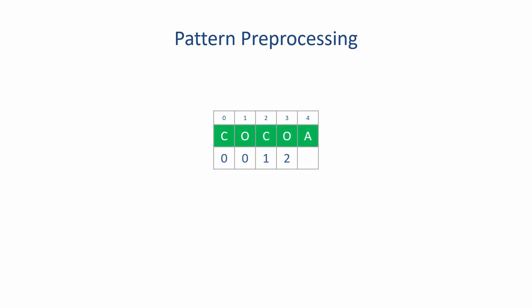Matching the whole pattern is, of course, a special case. We may want to stop searching because we've found what we're looking for. On the other hand, if we want to continue searching for more occurrences of the pattern, then we can include a fail value for the whole pattern. The last letter of the pattern is not the same as the first, so we would reset the pattern pointer to 0.